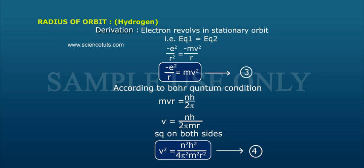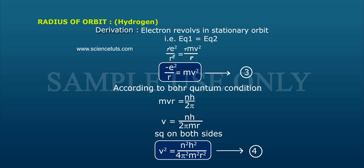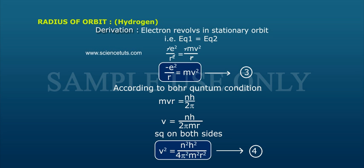Since the electron revolves in a stationary orbit, equation one equals equation two: minus e squared by r squared equals minus mv squared by r squared. Cancel r and the minus signs on both sides to get e squared by r equals mv squared — equation three. According to Bohr's quantum condition, mvr equals nh by 2 pi.